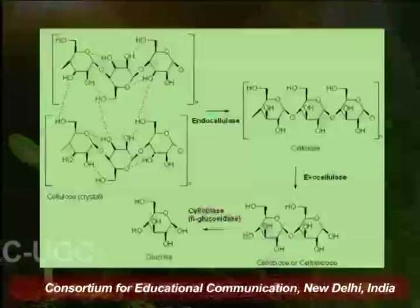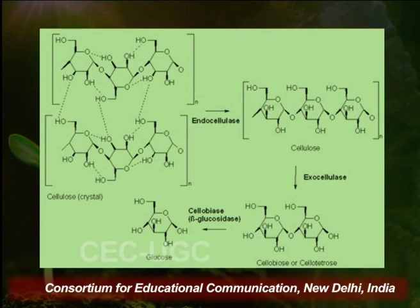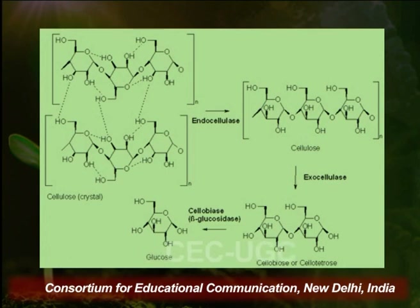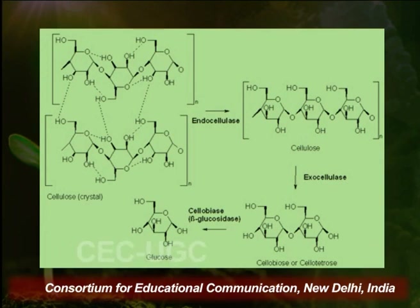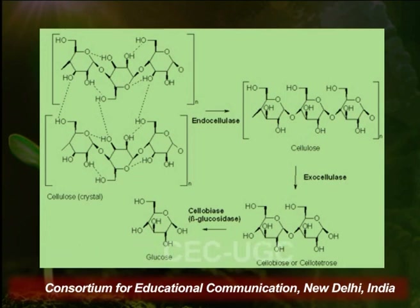In this image, you can clearly see the action of the three types of cellulases. First, cellulose is acted upon by endogluconases, which break down internal 1,4 glycosidic bonds giving rise to cellulosic oligosaccharides. These oligosaccharides are then acted upon by exogluconases giving rise to disaccharide cellobiose, and finally beta-glucosidases give rise to monomer glucose.